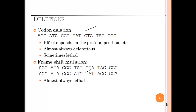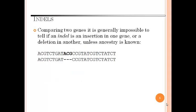Now we will discuss deletions. Deletions are of two types: codon deletion and frameshift mutation. Codon deletion's effect depends on the protein position. It is almost always deleterious and sometimes lethal, but frameshift mutation is almost always lethal. Comparing two genes, it is generally impossible to tell if an indel is an insertion in one gene or a deletion in another unless ancestry is known.